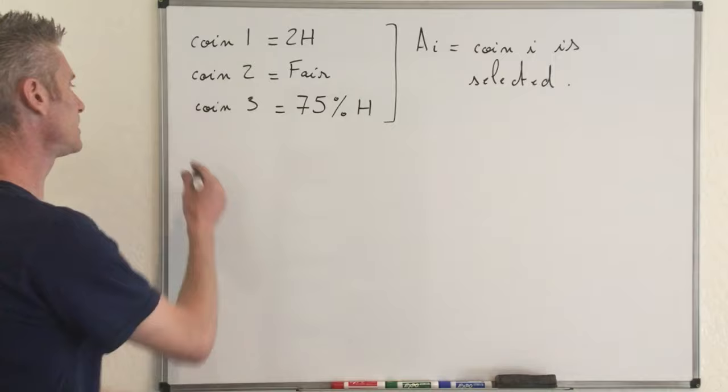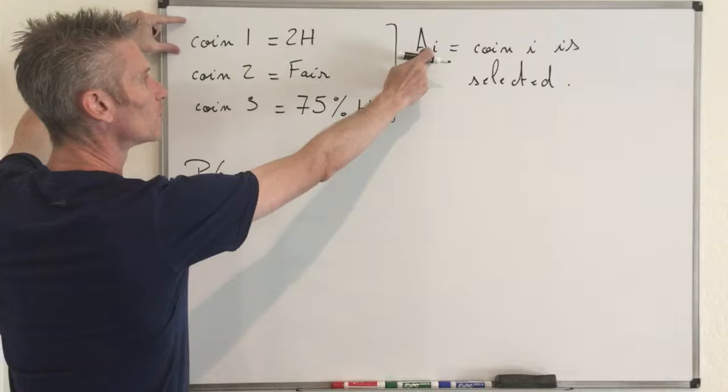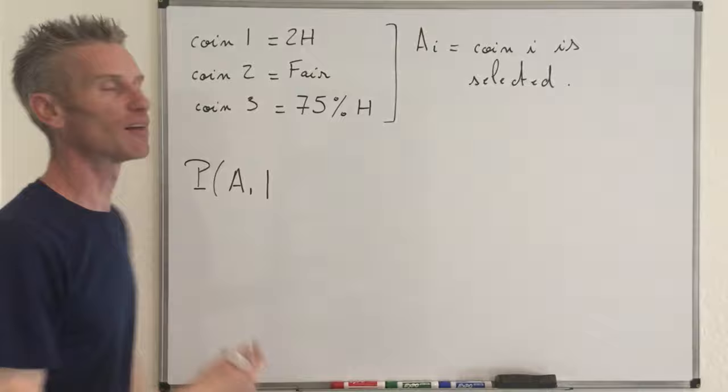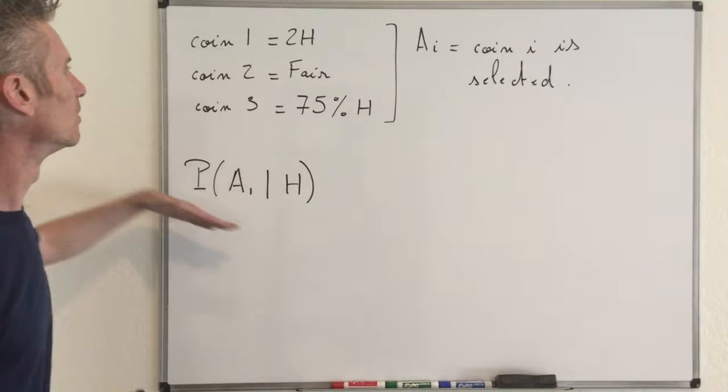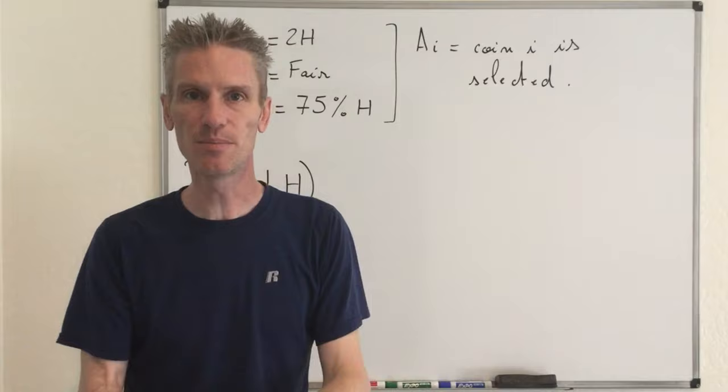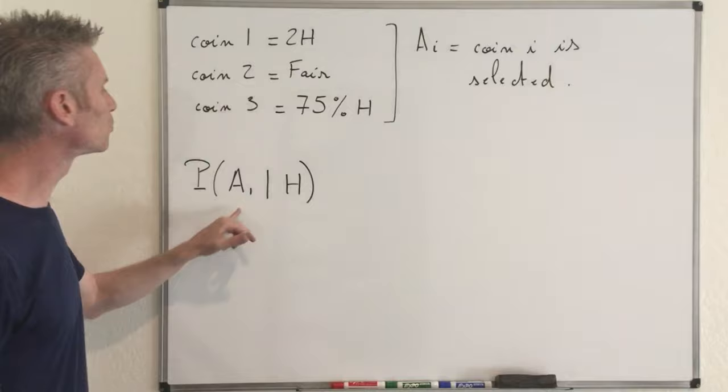So the goal is to compute P(A1 | H). We are in an experiment with two steps: step one, select a coin; step two, flip the coin. Both steps are random and both are parts of the experiment.